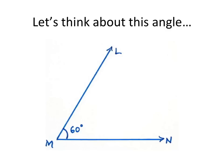I want you to think about this angle. I know several things about it just by looking at it. The name of this angle is angle LMN. I put the M in the middle because that's where the vertex is, and then I labeled the two endpoints. I can tell that this angle is 60 degrees. It's an acute angle because any angle that is less than 90 is considered to be acute.